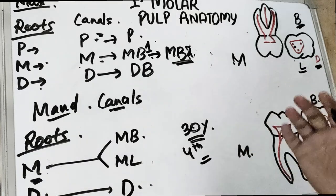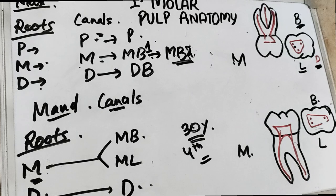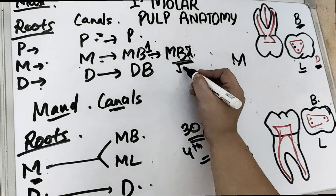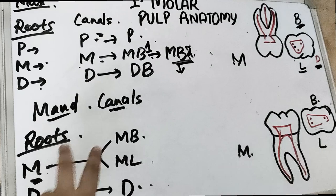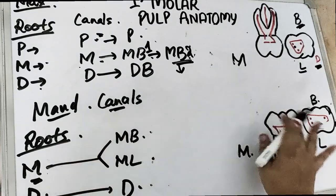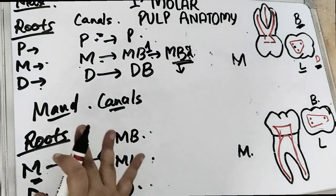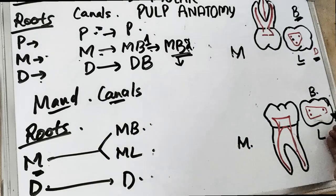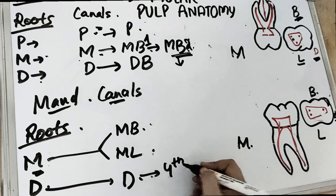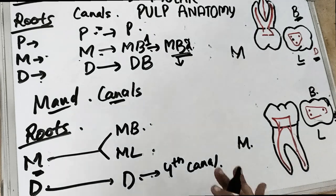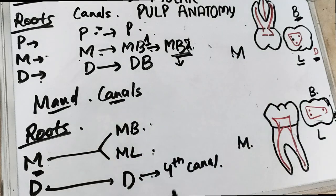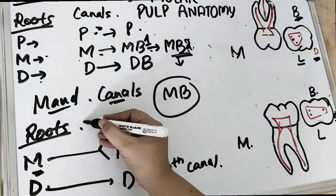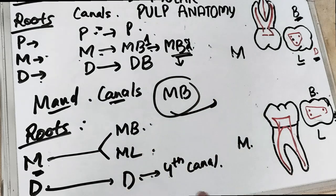For the mandibular first molar, the fourth canal is placed in the distal root, because the mesial root already has two canals. The most difficult canal to locate is always the mesio-buccal canal, for both the maxillary and mandibular first molar. You can remember: coming first in the class is very difficult — and mesio-buccal comes first as you approach from the midline.